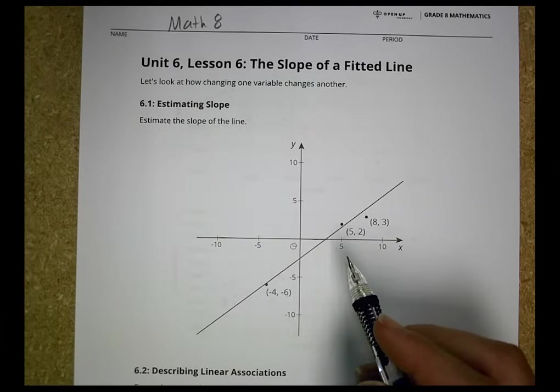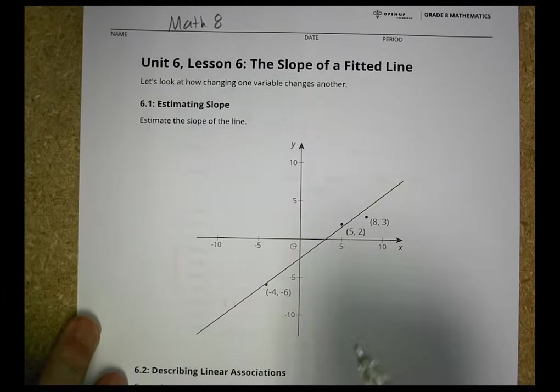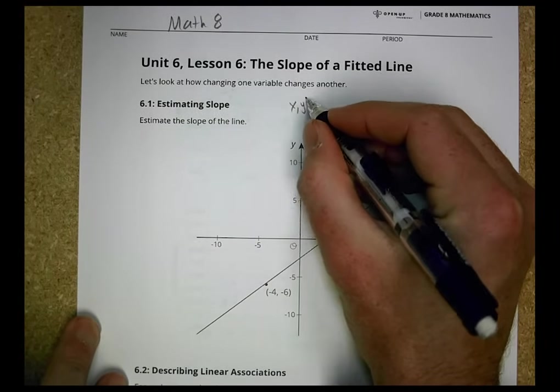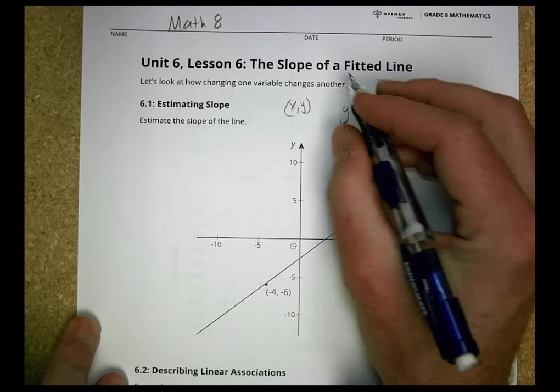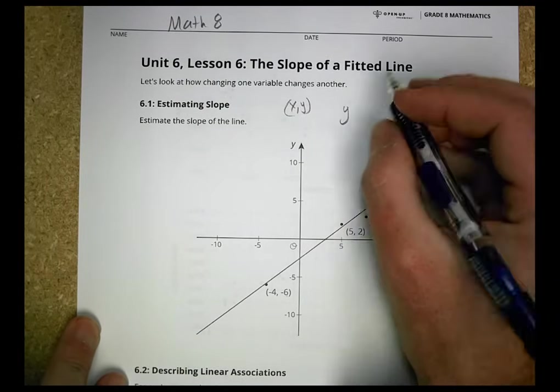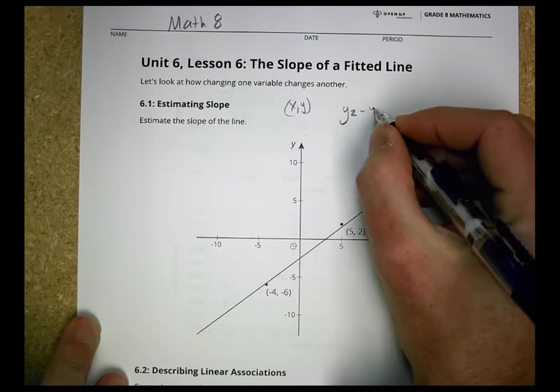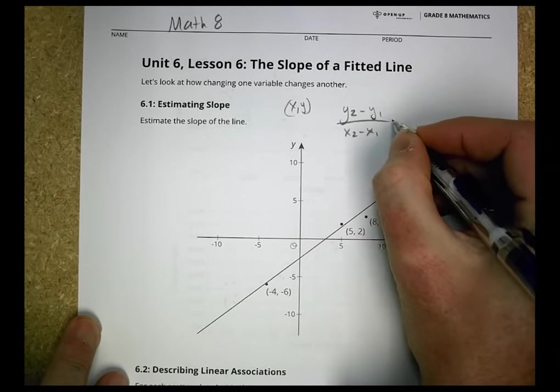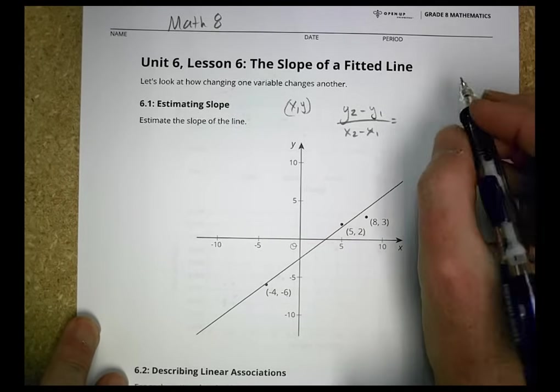And so you can use those points to find the slope of a line. The way we usually find that with some points is we take the x-y value of the points, and we pick one point and we call it point 2 and 1. We say y2 minus y1 divided by x2 minus x1 is going to give me my slope that I'm looking for.